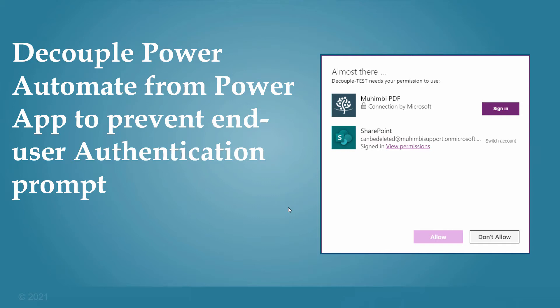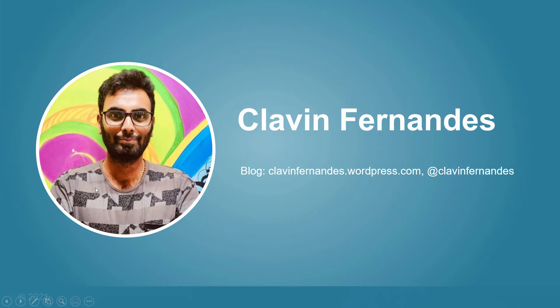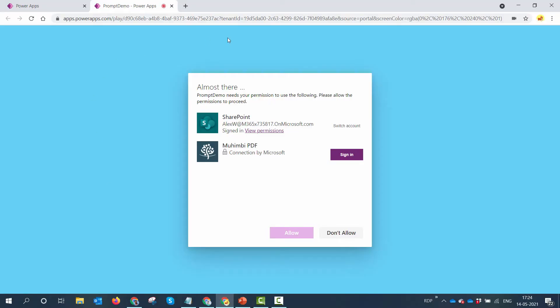Hello everyone and a very warm welcome to today's tutorial. We are going to address a problem in Power Apps: when you deploy the app to end users, they are getting an authentication prompt and you don't want this prompt to be visible. My name is Clevin and I work as a technical consultant. You can find my blogs at clevinfernandes.wordpress.com and my Twitter handle is at Clevin Fernandes. Feel free to connect with me on LinkedIn.